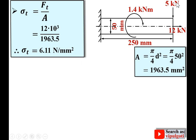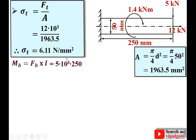The transverse force FB is responsible for creating the bending moment. Bending moment M = force × perpendicular distance. FB = 5 kN (multiplied by 10³ to convert to Newtons), and the perpendicular distance from the force to the fixed end is 250 mm. Simplifying: bending moment M = 1.25 × 10⁶ N·mm.